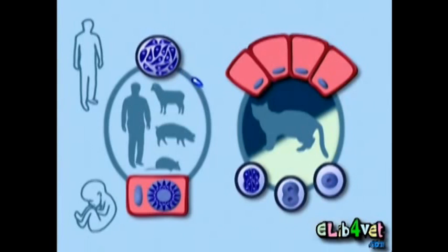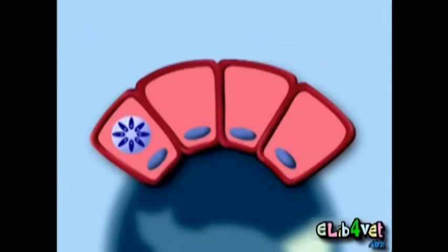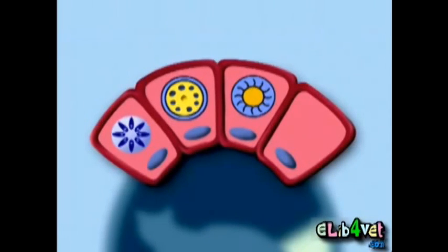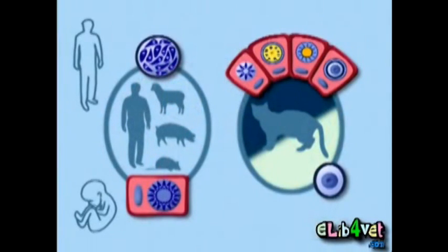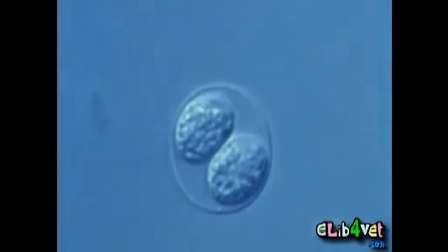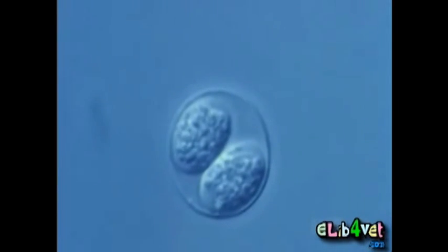Ingestion in the intestine of a cat leads to the invasion of enterocytes, where the bradyzoites undergo a typical coccidian cycle. In the epithelial cells of the duodenum, multiplication or schizogony takes place. The resulting merozoites invade neighboring cells. They develop first into macro and micro gametocytes, then into macro and micro gametes. This is known as gametogenesis. By fusion of the flagellated micro gametes with the macro gametes, an oocyst is produced. Oocysts are excreted unsporulated, meaning they contain a single cell or zygote. The thick oocyst wall protects them against external influences and is extremely resistant to disinfection. It can persist infectiously for several months.